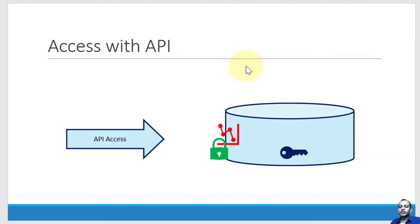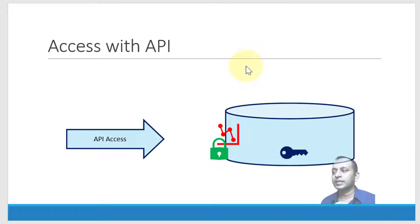In the earlier lecture we discussed how to use API access using the REST protocol and do various operations like sealing and unsealing, as well as listing the secret engines available within the vault. Now we are going to discuss in more detail about how to use the REST API to do various operations against a specific secret engine.